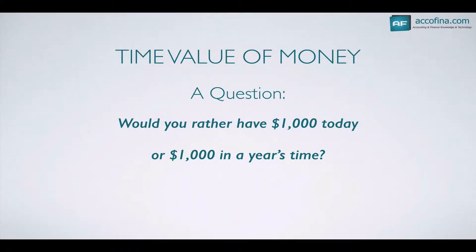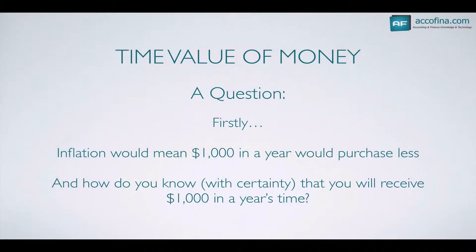The time value of money. Let's explain it this way — let's pose a question. Would you rather have $1,000 today, or $1,000 in a year's time? Does it make a difference? Which one would you prefer? Well, firstly, inflation would mean $1,000 in a year would purchase less than $1,000 today. So that's one reason why you might want $1,000 today. And secondly, how do you know with certainty that you will definitely receive $1,000 in a year's time? That's another reason why you might want $1,000 today.